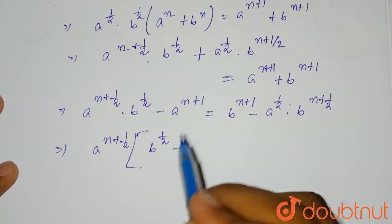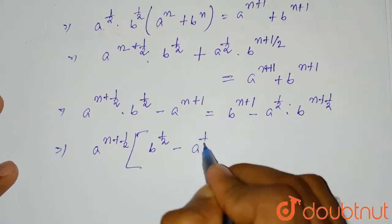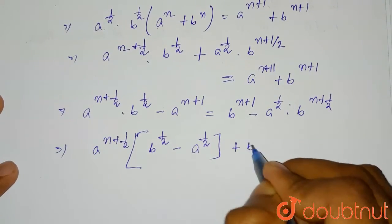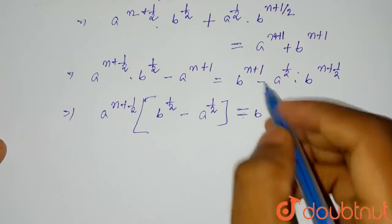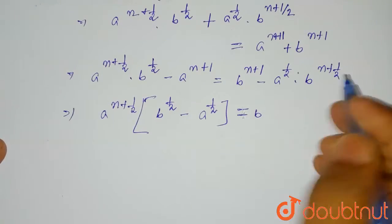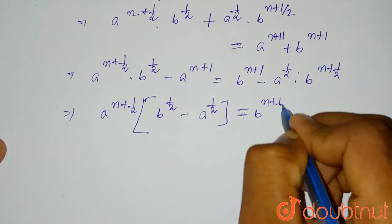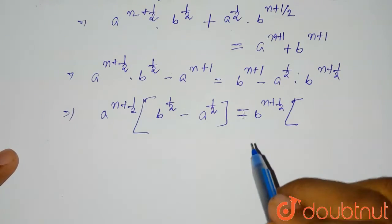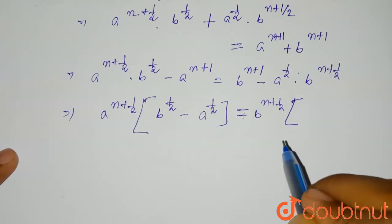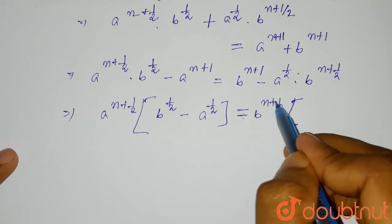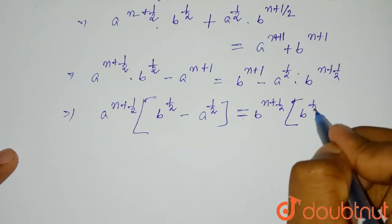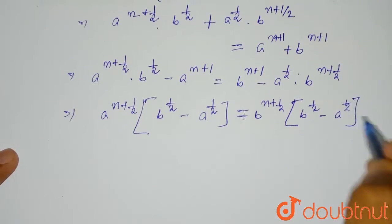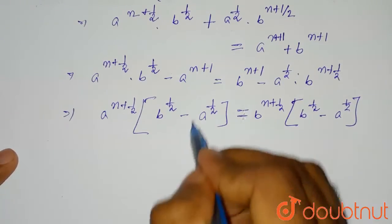Taking a^(n+1/2) common from the left, we are left with (b^(1/2) − a^(1/2)). Taking b^(n+1/2) common from the right, b^(n+1) = b^(n+1/2+1/2), leaving (b^(1/2) − a^(1/2)). Since the two bracketed terms (b^(1/2) − a^(1/2)) are identical, they cancel.